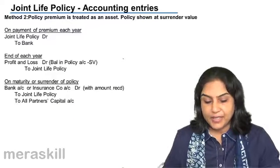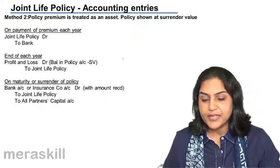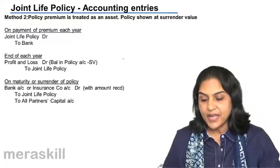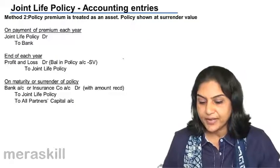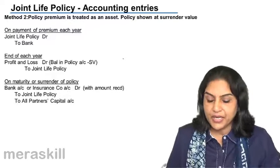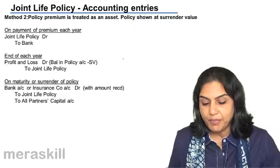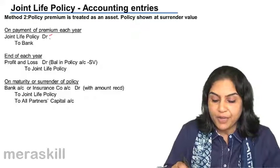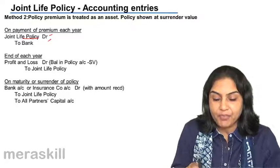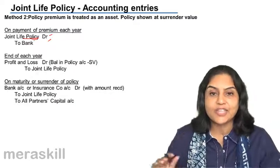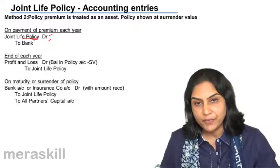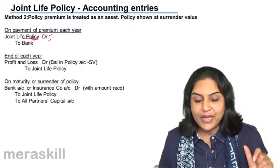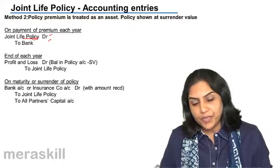Let's consider the second method. Under the second method, policy premium is treated as an asset and the policy is shown at surrender value. When we pay the premium, we debit joint life policy account and credit bank — joint life policy is not an expense but an asset. Now the premium has been paid and we have debited an asset called joint life policy account.